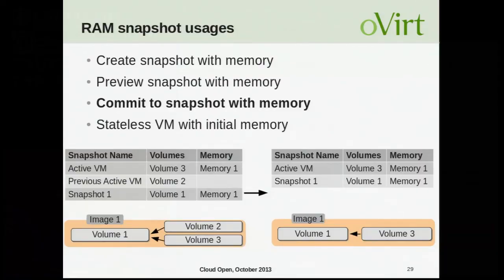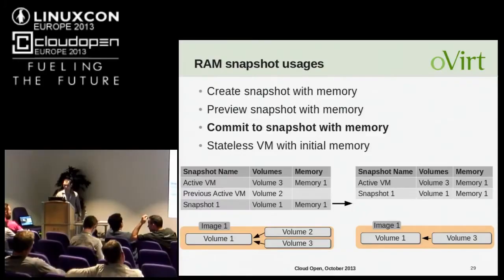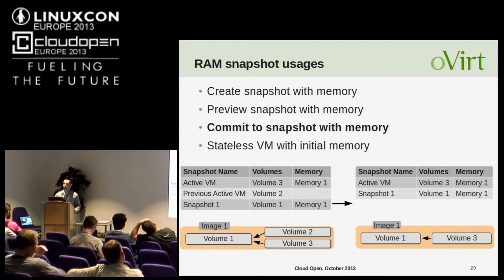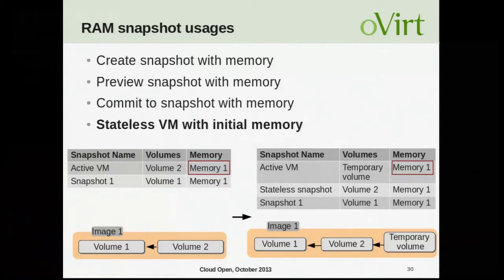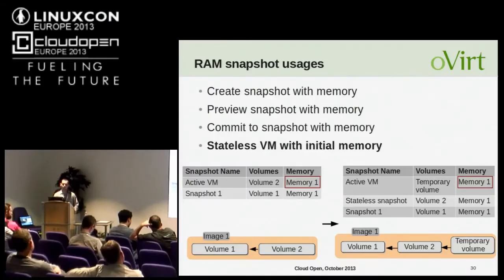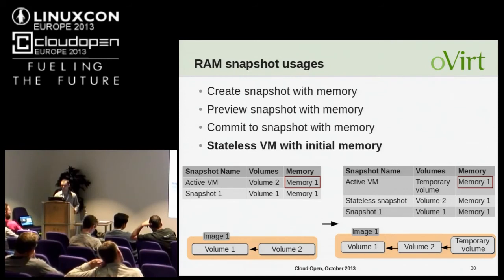The committing to snapshot operation stays the same. Now, if we want to run a VM that was committed to a RAM snapshot as stateless, we want the memory to be restored each time we run the VM. So we associate the memory that was associated with the active VM entry before the operation with the new active VM entry.